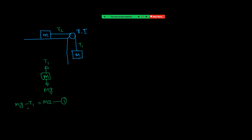For small m: T2 = mA (equation 2). Coming to the pulley: tension T1 acts downwards producing clockwise torque, and tension T2 produces anticlockwise torque.